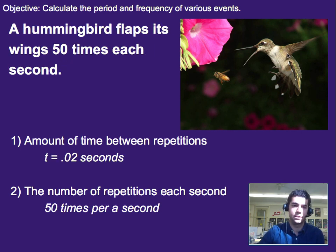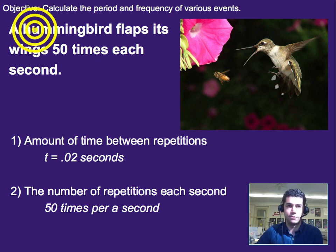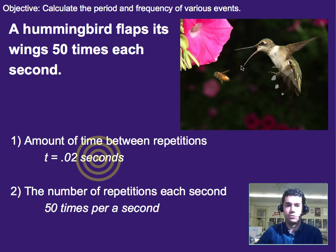Well, it happens to be for a hummingbird that its wings flap 50 times each second. So that would mean in between each single flap there would be 0.02 seconds, or you could say that there's a repetition of 50 flaps each second, or 50 times per second.